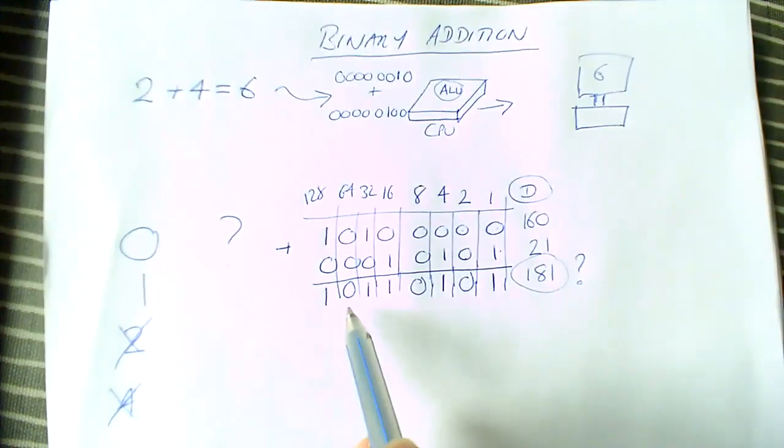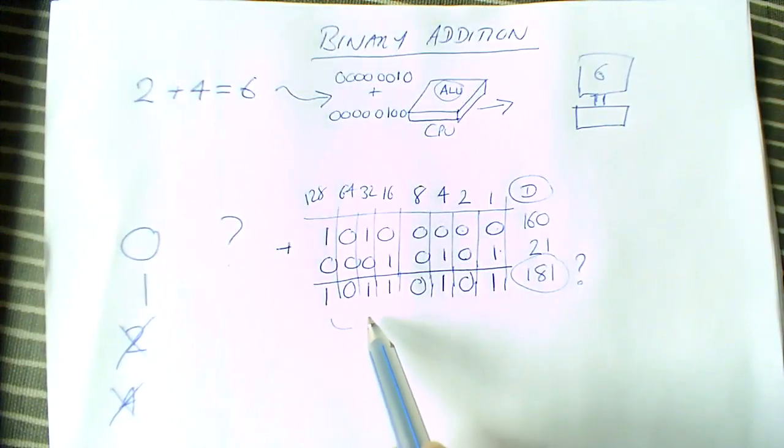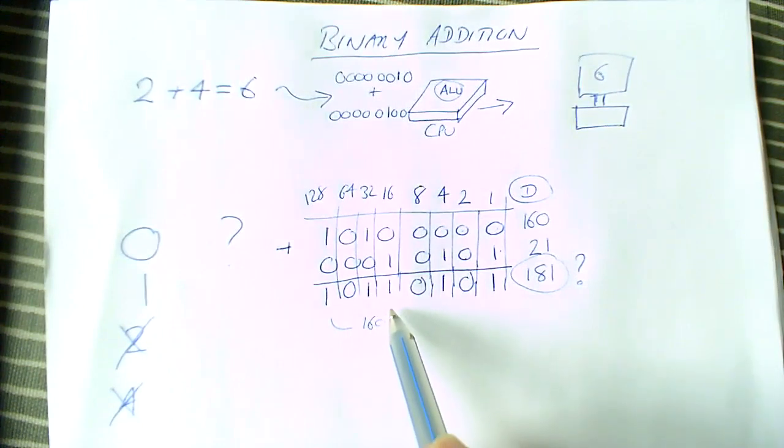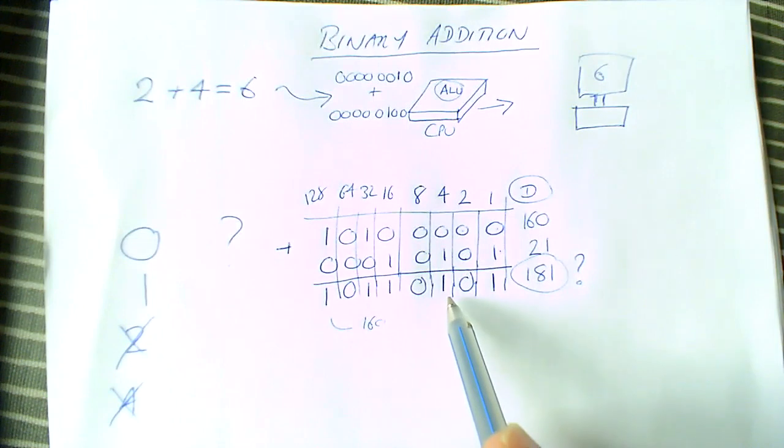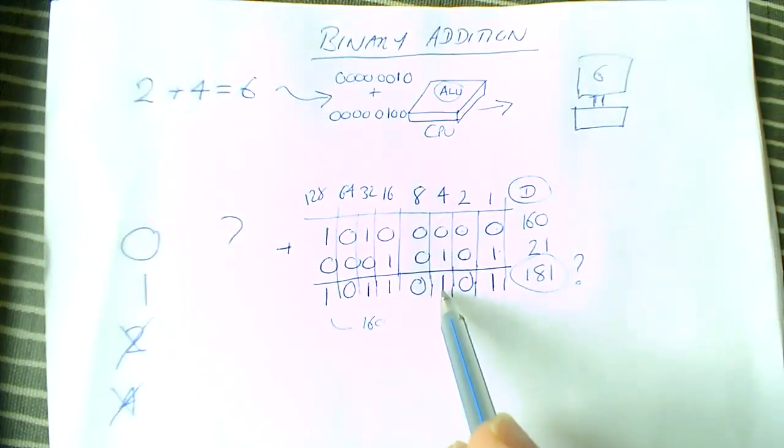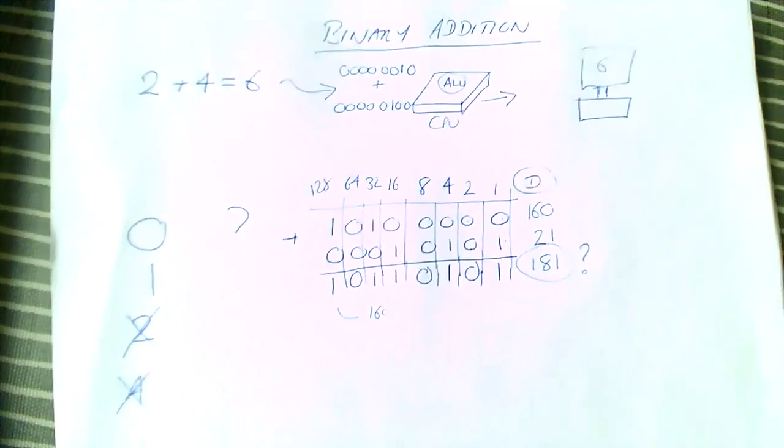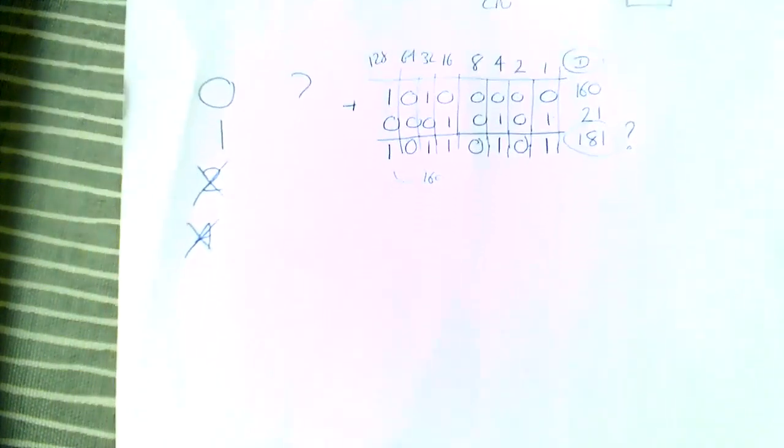Well, let's check. So 128, yeah, plus 32 is 160, 176, 180, 181. It is. So we've done it correctly.